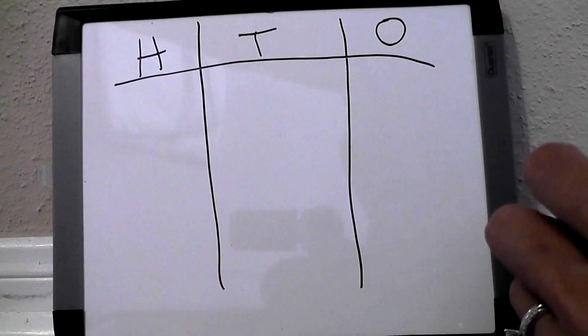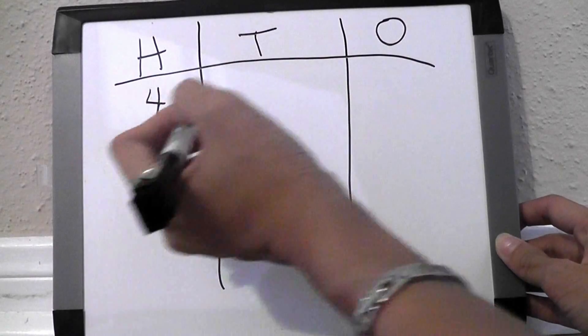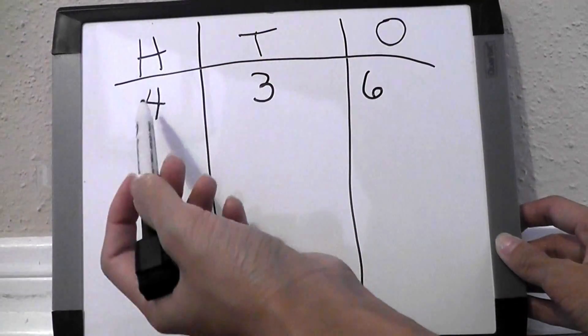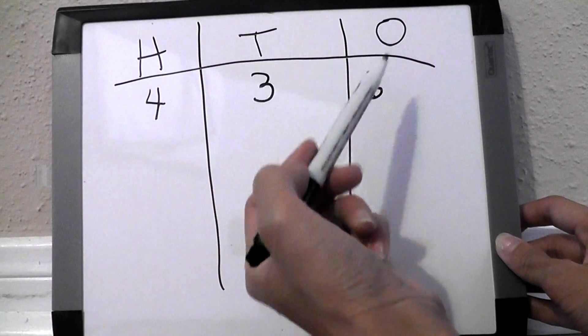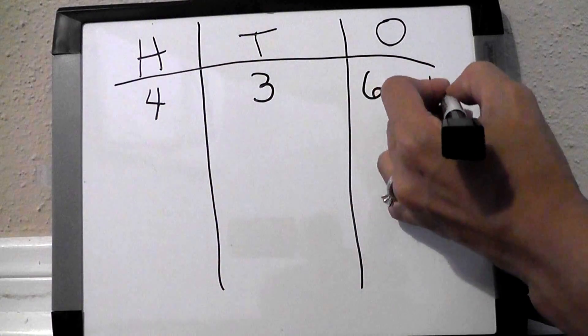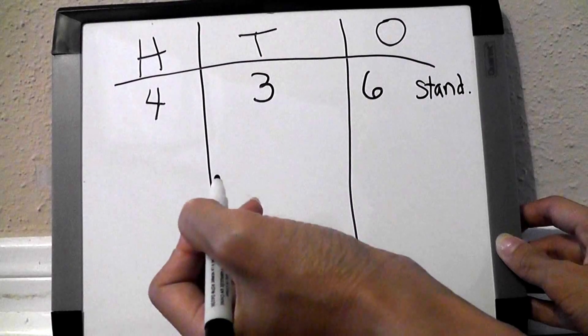Given an example of a number like 436, the students would write the four in the hundreds, a three in the tens, and a six in the ones. And that would be our standard form of writing, and I'll abbreviate it.